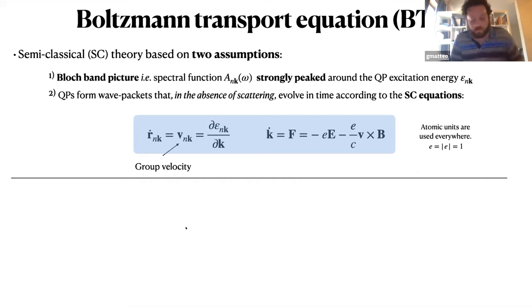Now a couple of words on the Boltzmann transport equation. First of all it's a semi-classical technique or formalism that is based on two assumptions. First of all we assume that the electronic properties can be described with the Bloch band picture. What does it mean? That from the many-body perspective we have the spectral function that is strongly peaked around the quasi-particle excitation. Moreover we assume that these quasi-particle states form wave packets that in the absence of scattering events evolve in time according to the semi-classical equation where we have the group velocity here and the standard electromagnetic force that determines a variation in time of the quasi-momentum k.